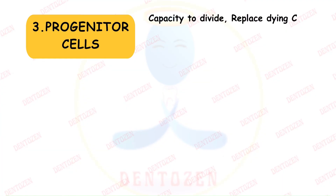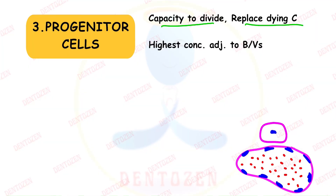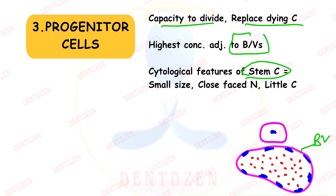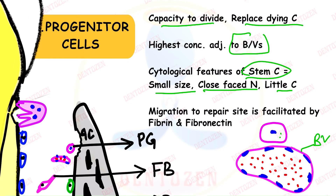Progenitor cells have the capacity to divide and replace dying cells. Their highest concentration is adjacent to blood vessels. Their cytological features are similar to stem cells: small size, closed-face nucleus, and little cytoplasm. These cells migrate to the repair site with the help of fibrin and fibronectin to form new cells and replace dying cells.